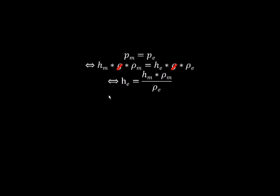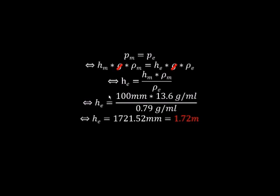Finally, we can insert the values we already know into the formula and receive a height of 1721.52 mm. So, the column of ethanol must be 1.72 m high.